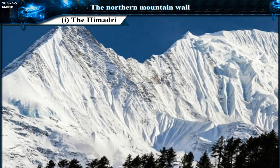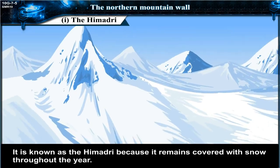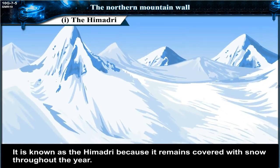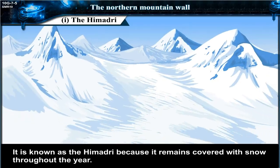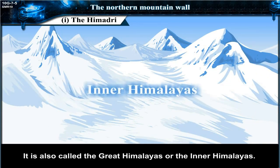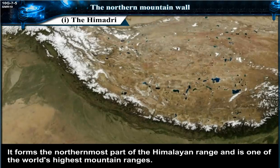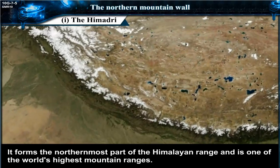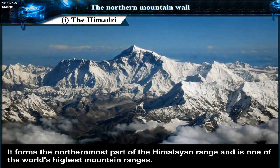The first is the Himadri. It is known as the Himadri because it remains covered with snow throughout the year. It is also called the Great Himalayas or the Inner Himalayas. It forms the northernmost part of the Himalayan range and is one of the world's highest mountain ranges.